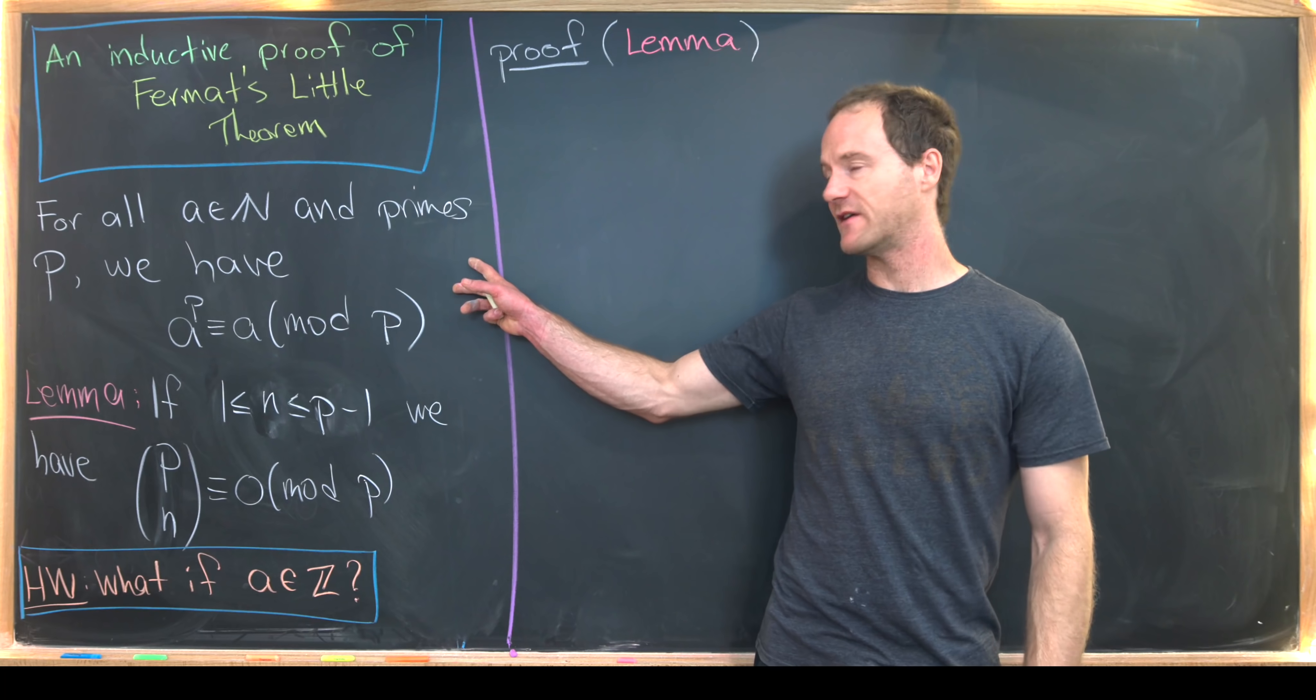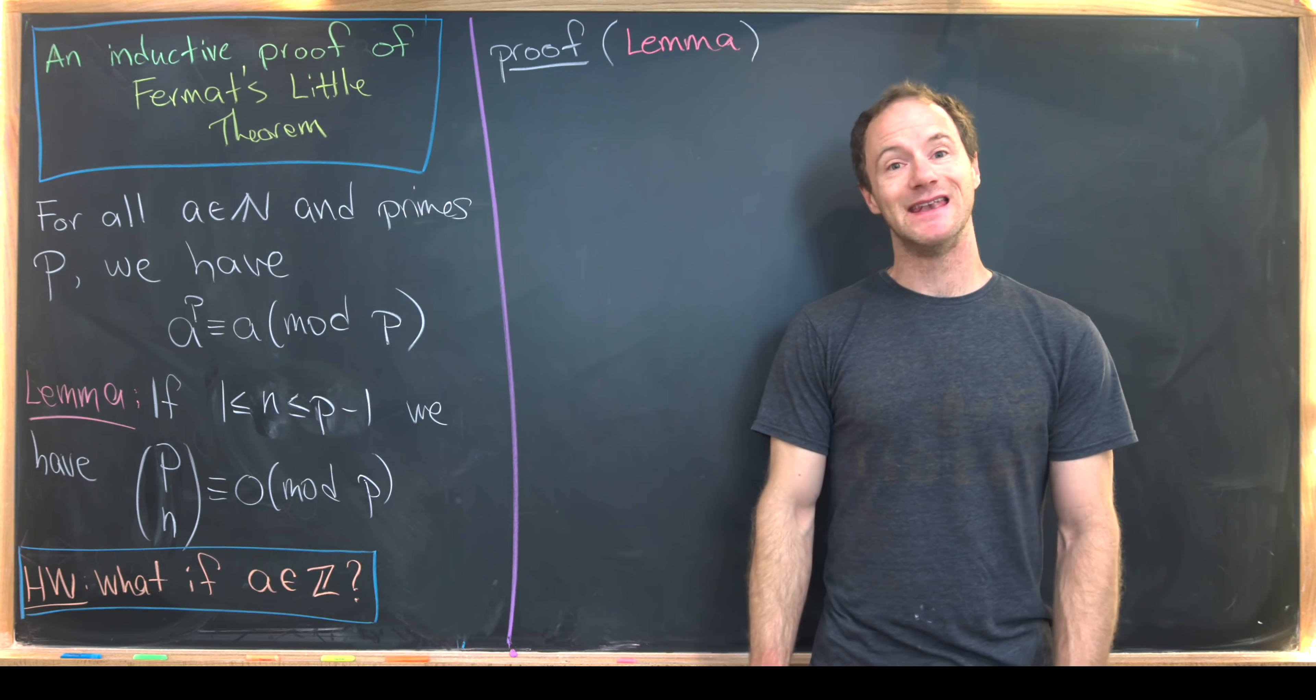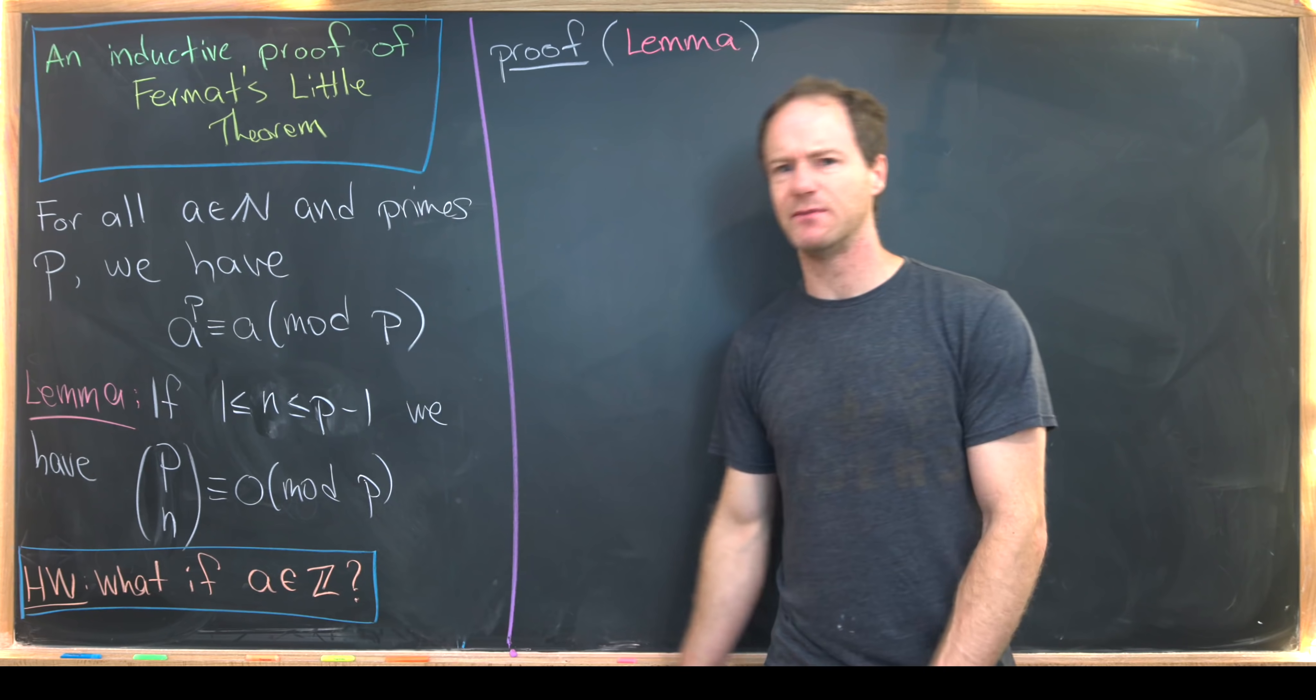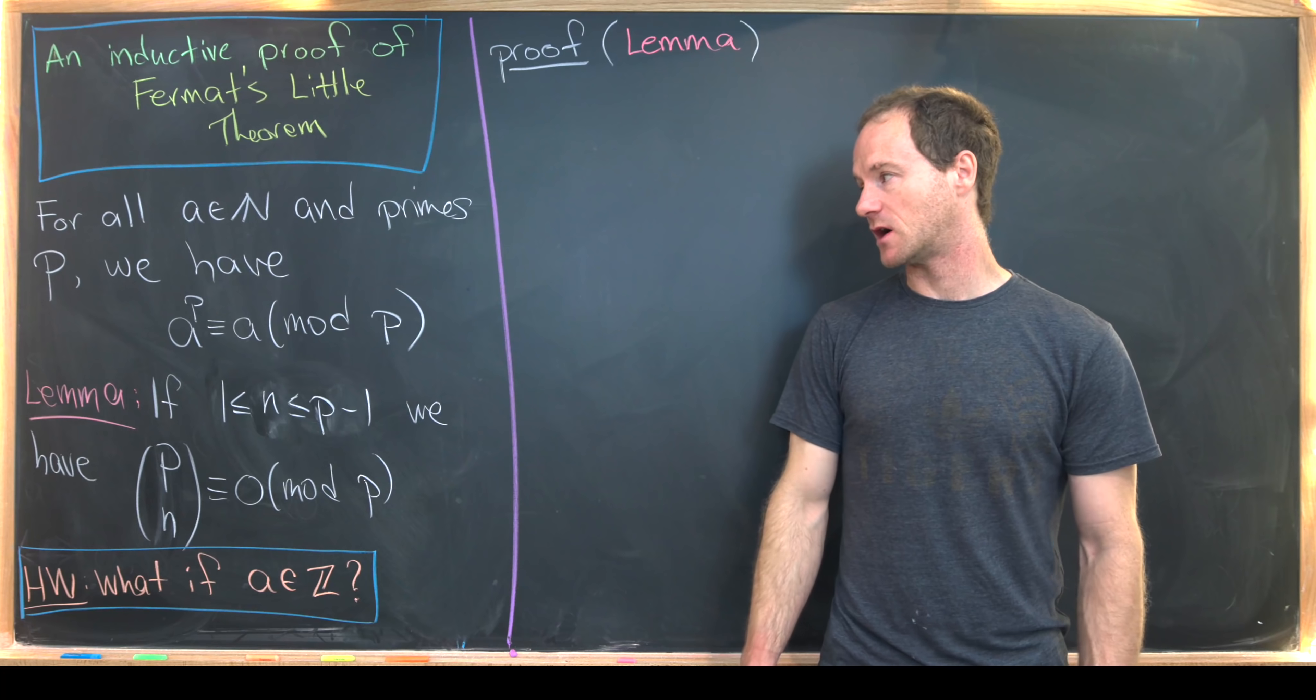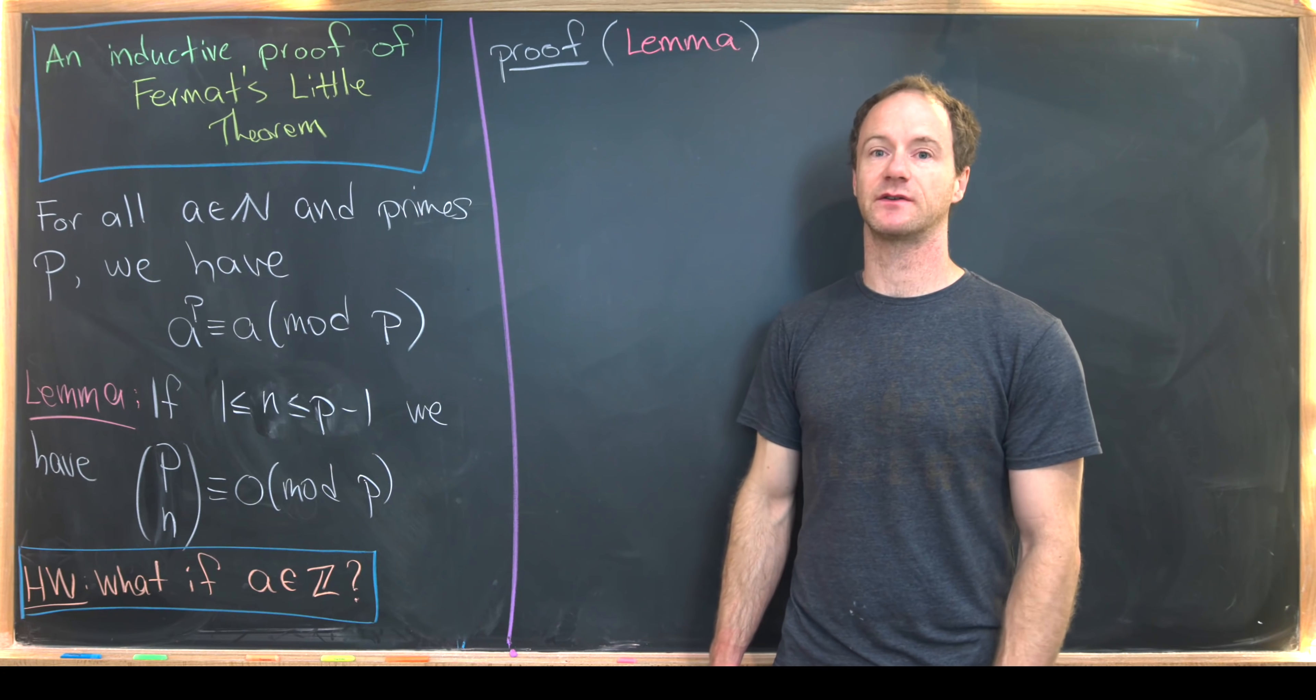So let's recall what FLT says first. So it says for all natural numbers A, and in fact it says for all integers A, but I'll let you guys extend this to integers. And primes P, we have A to the P is congruent to A mod P. This is a version of Fermat's Little Theorem.